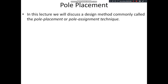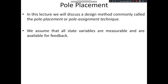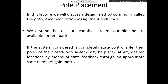In this lecture, we will discuss a design method commonly called pole placement or the pole assignment technique. We assume that all state variables are measurable and are available for feedback. If the system considered is completely state controllable, then the poles of the closed-loop system may be placed at any desired location by means of state feedback through an appropriate state feedback gain matrix. If the system is state controllable, we adjust the value of the control input U with a gain matrix K, which is used for relocating the existing poles of the system.